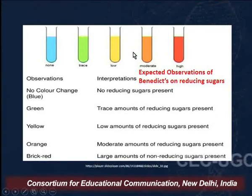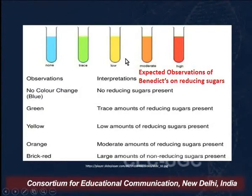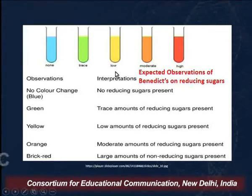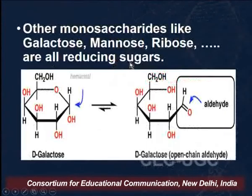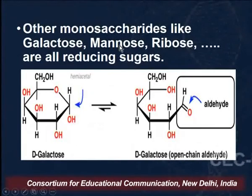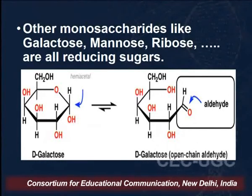Now glucometers are being used to find out the amount of sugar in the blood. In glucometers, the strip is coated with an enzyme that is specific for glucose, and we can know the exact value of glucose in the blood. This is the test currently being conducted for finding out the amount of glucose in blood.